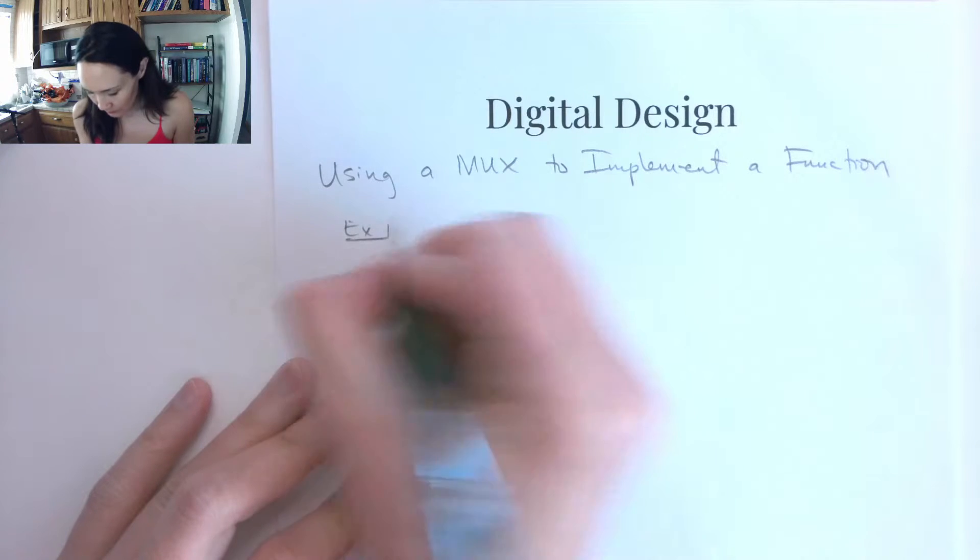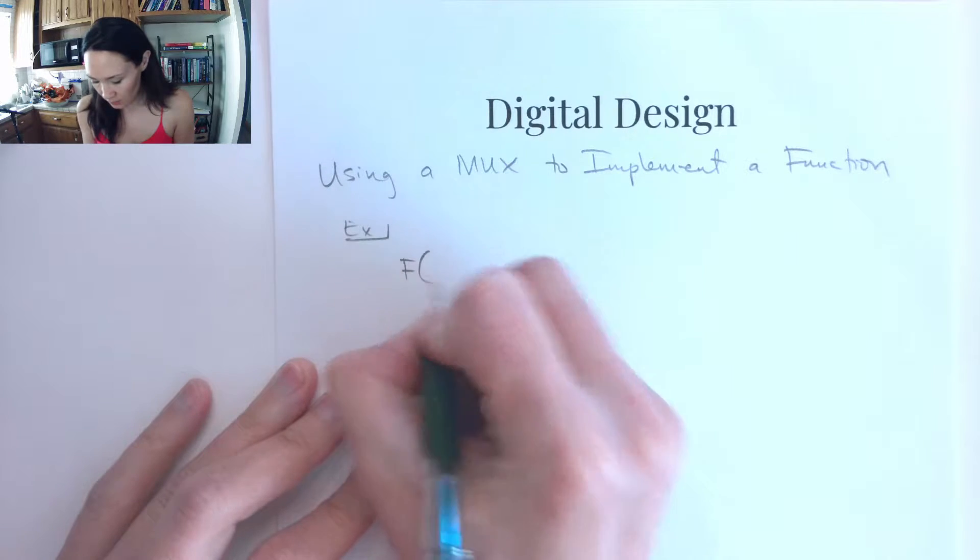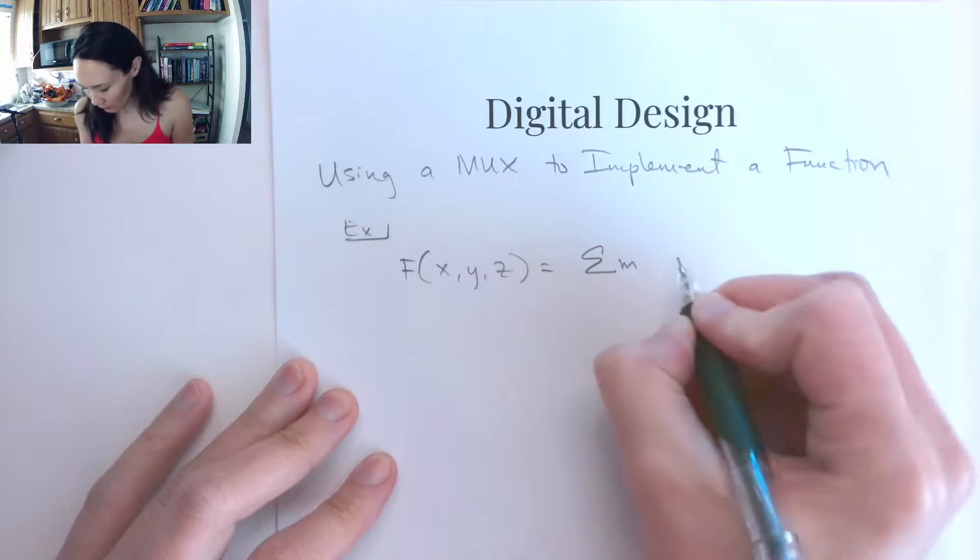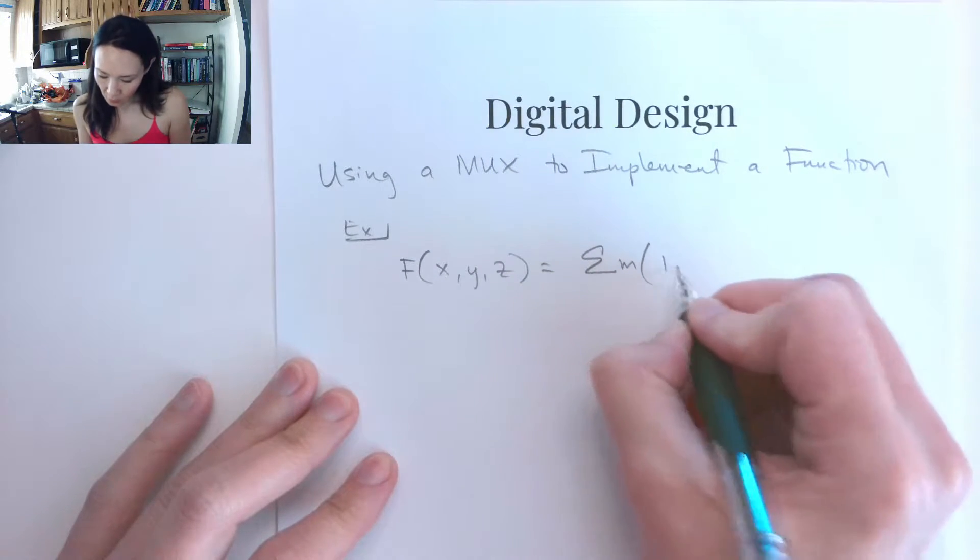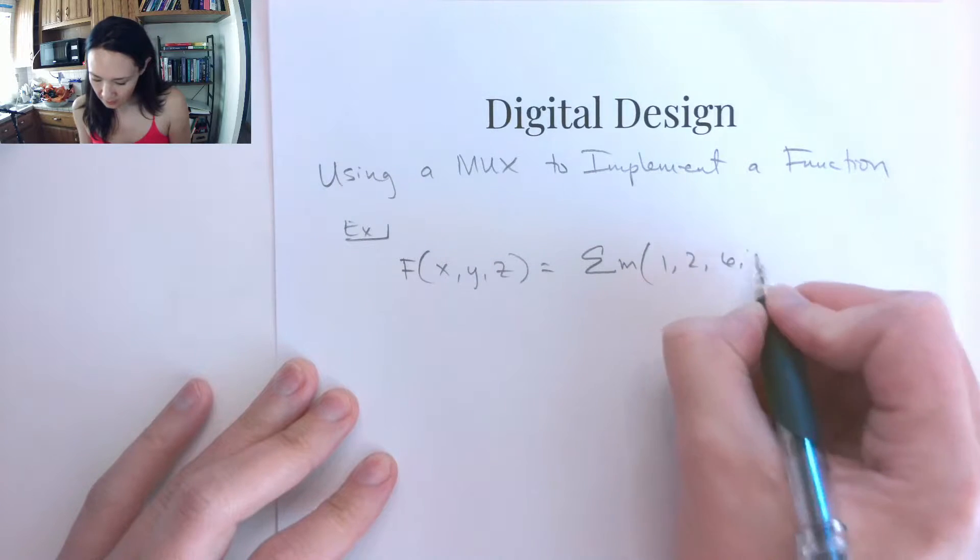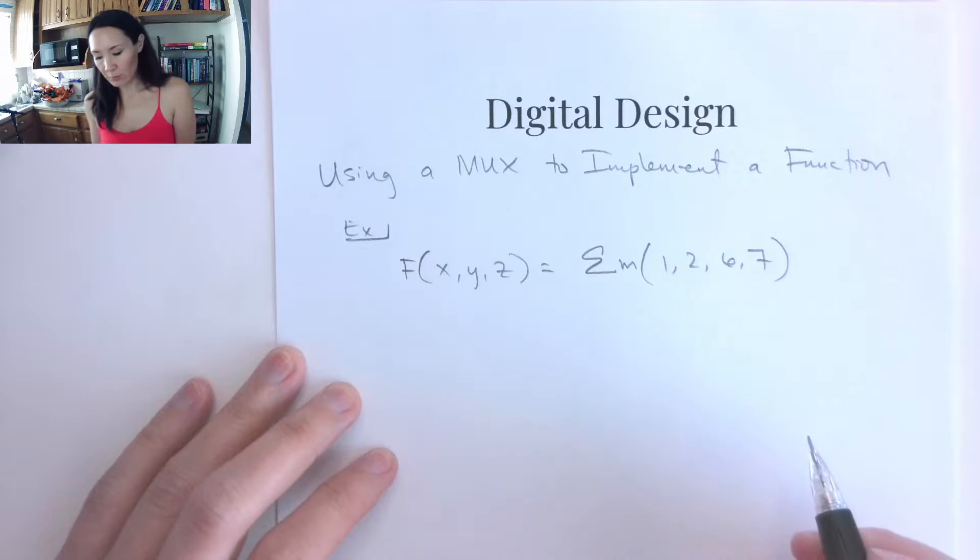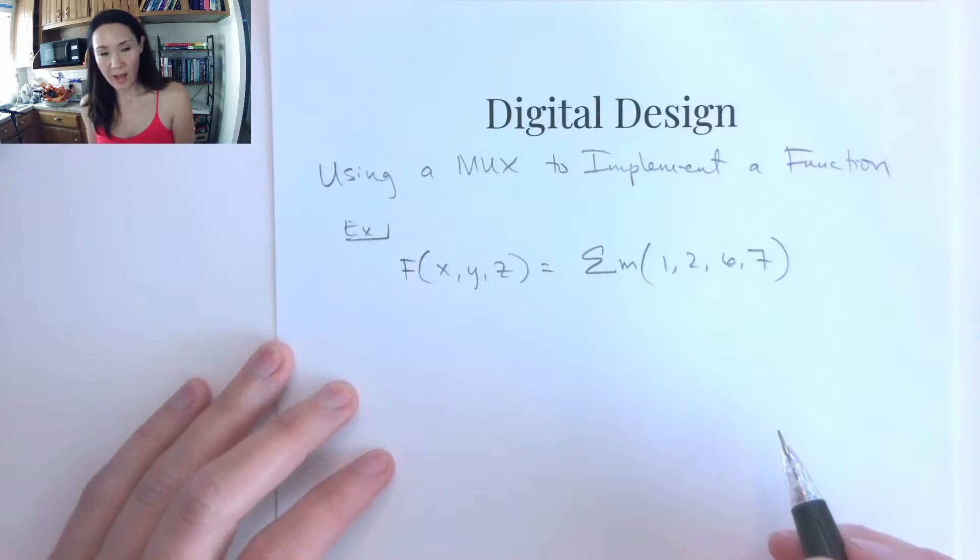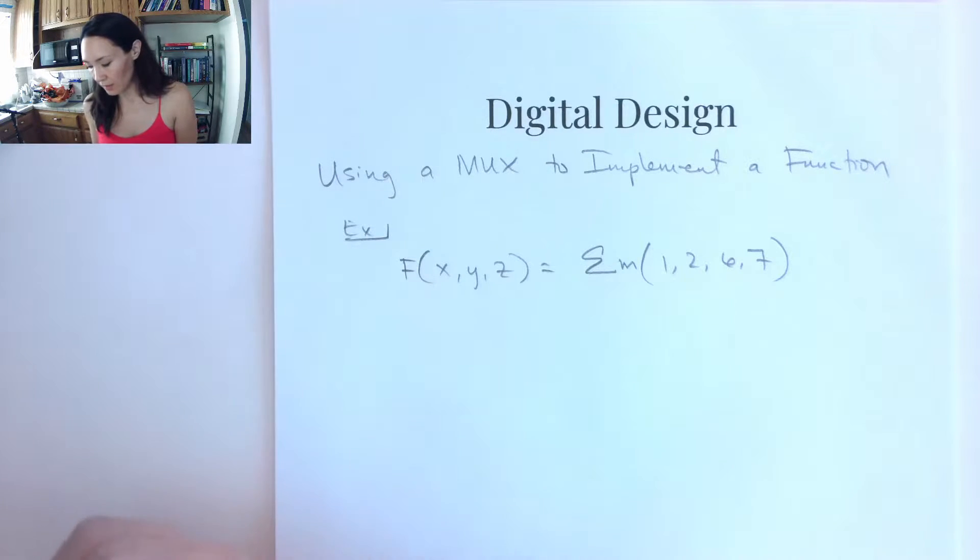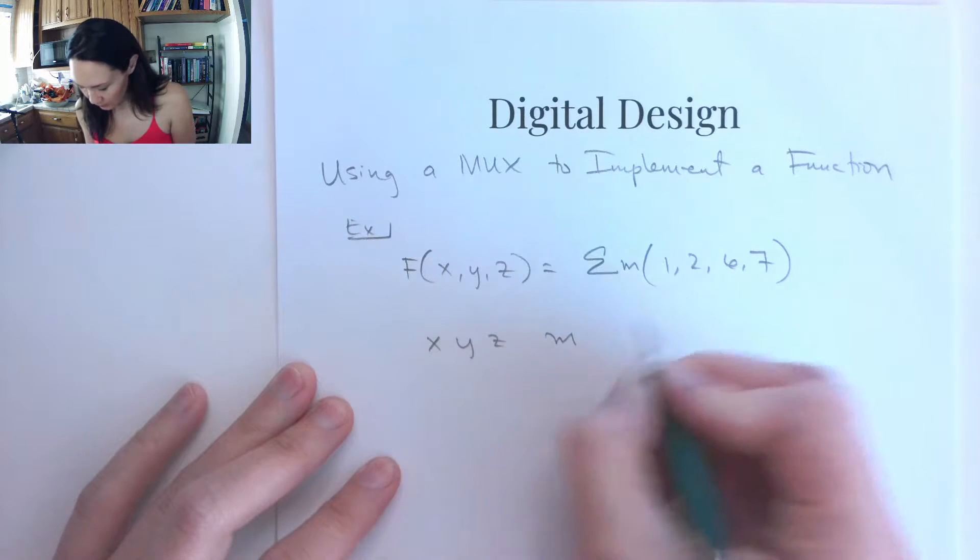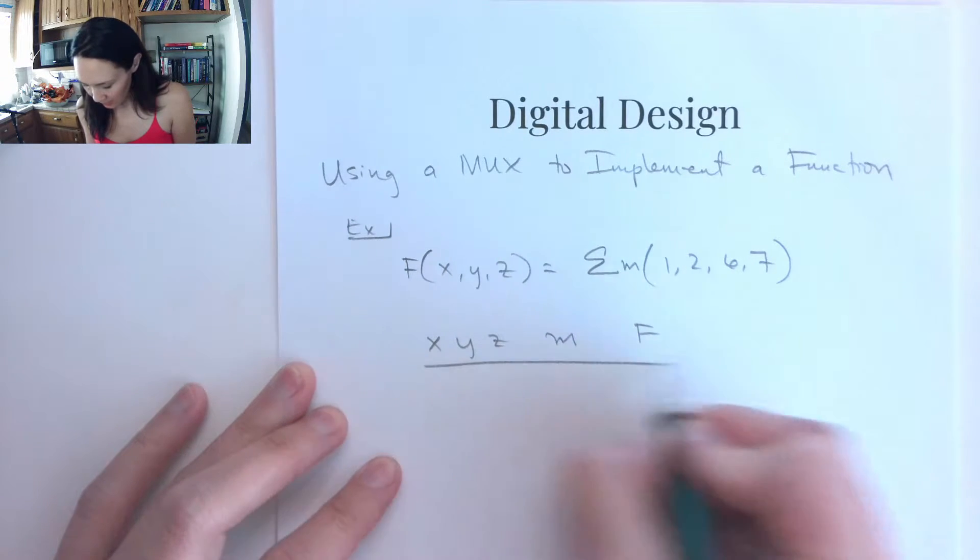For example, suppose we have the function with three inputs, x, y, z, and in minterm form is the sum of minterms 1, 2, 6, and 7. So first things first, let's write out the truth table for this function so we can figure out how to map the inputs to the output for the multiplexer. So if we have inputs x, y, z, I'll put the minterms here, and the output f.